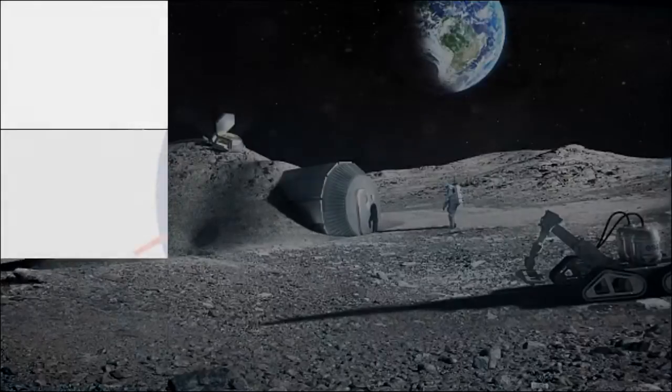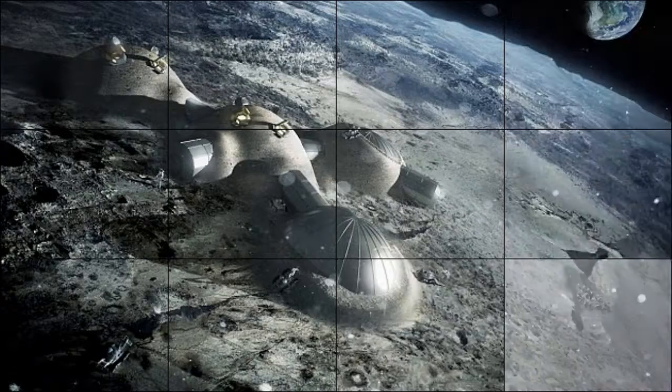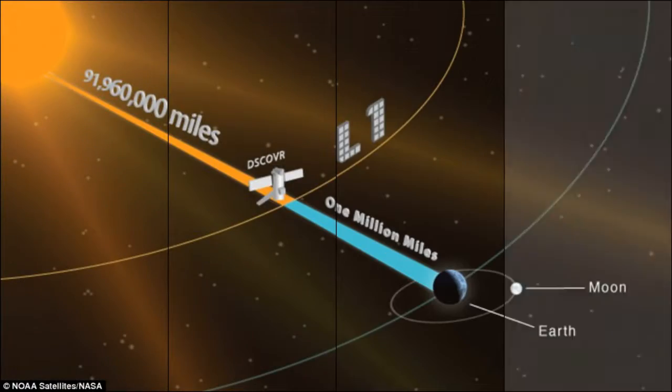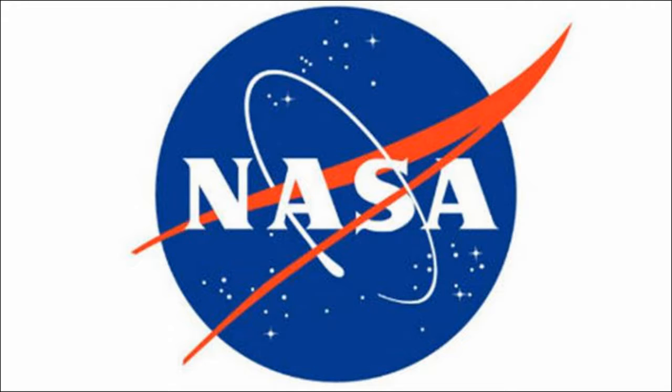They estimate the impacting meteoroid would have been about half the size of a pinhead, 0.8 millimeters, assuming a velocity of about 7 kilometers per second and a density of an ordinary chondrite meteorite, 2.7 grams per cubic centimeter.